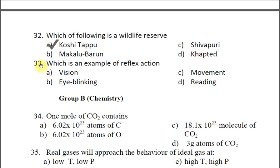Question thirty-three: Which is an example of reflex action? A vision, B eye blinking, C movement, D reading. The correct answer is B eye blinking. Eye blinking can be a corneal reflex when the cornea is stimulated by a foreign object.